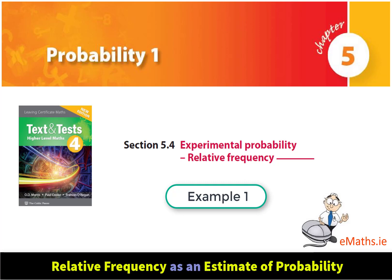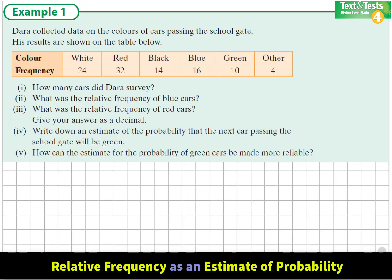Experimental probability example 1: using relative frequency as an estimate of probability. Information has been collected about cars passing the school gate and the colours of each car. We are asked how many cars Dara surveyed. If we count the frequency of each car, we see that it totals to 100, so Dara must have surveyed 100 cars.